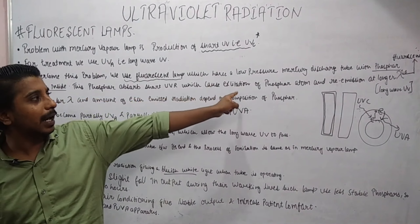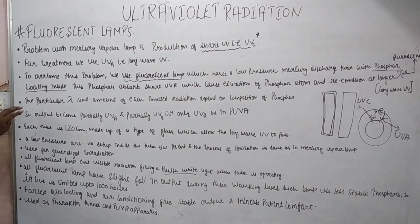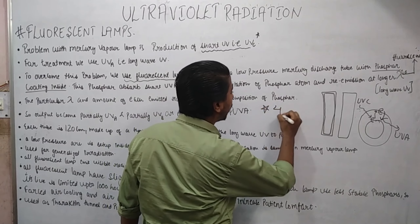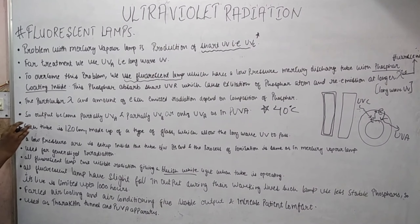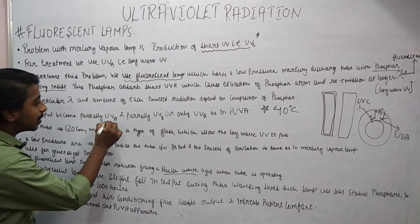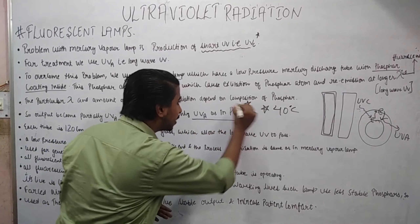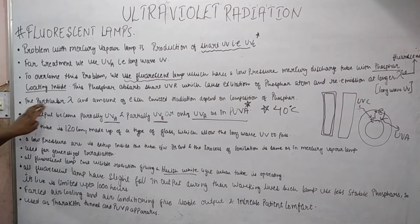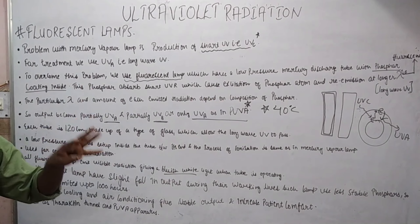This phosphor absorbs short UVC and causes the excitation of phosphor atoms, then re-emits the long wavelength. The wavelength also depends upon the temperature, while the optimum temperature is about 40 degrees Celsius for optimum emission. The particular wavelength and amount of each emitted radiation depend upon the composition of phosphor. Emission also depends upon temperature.